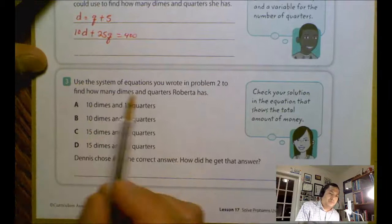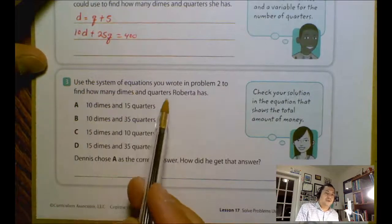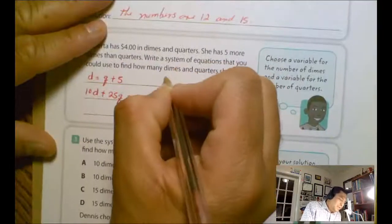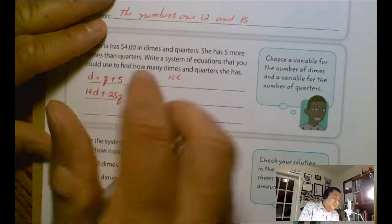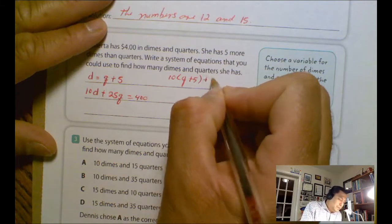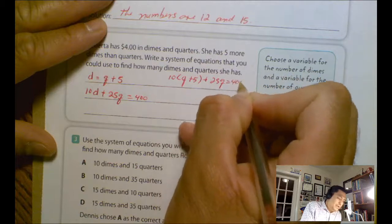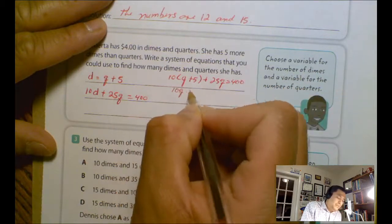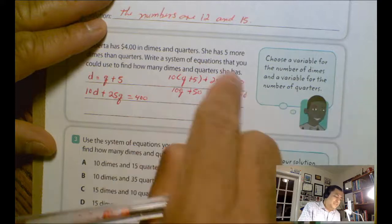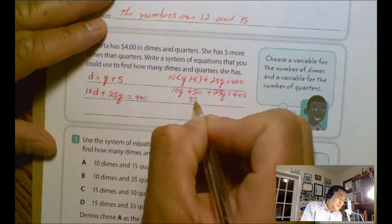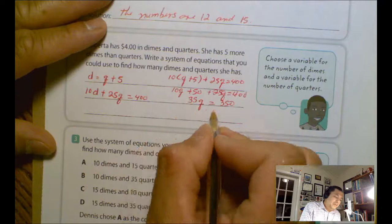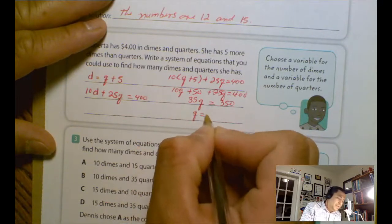Number three: Use the system of equations you wrote in problem number two to find how many dimes and quarters Roberta has. If you solve this system of equations, I have 10 times (q plus 5) plus 25q equals 400. Then 10 times q is 10q plus 50 plus 25q equals 400. If we simplify, we end with 35q equals 350. And then if we divide by 35, we have that q equals 10.